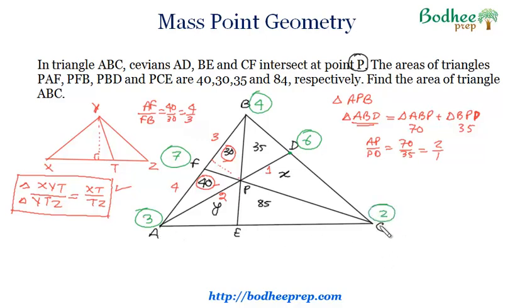And on line AC, we can see that the masses are 3 and 2. So the ratio of AE and EC would be 2 is to 3. So this is what we have done.